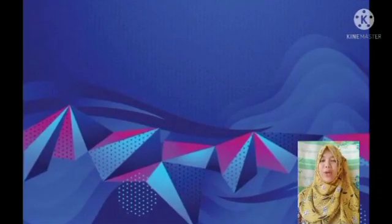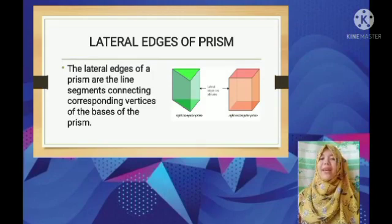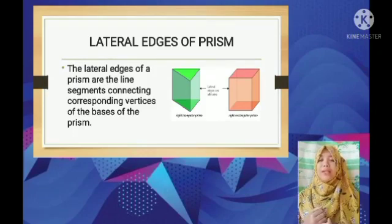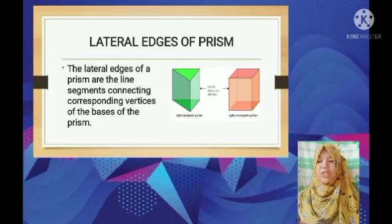Now we're going to talk about the lateral edges of the prism. The lateral edges are the line segments that connect the corresponding vertices of the bases. The lateral edges of the prism are parallel and congruent. When the lateral edges and the altitude are equal, we call it a right prism because the lateral edge makes a right angle with the base.